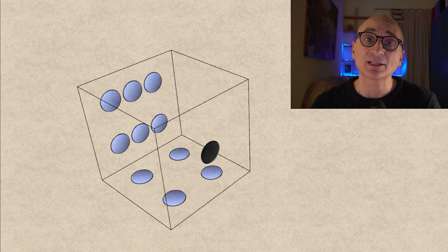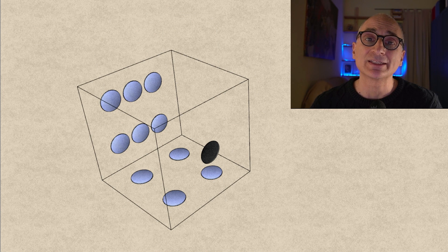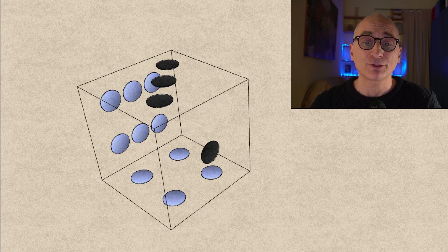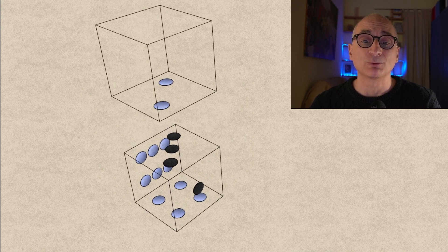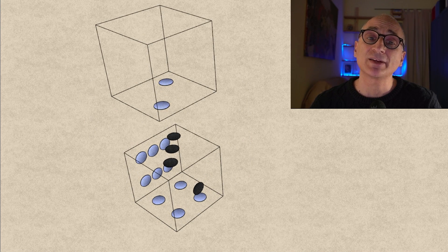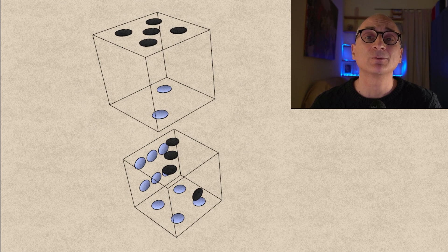So let's assume that on the bottom face there's a four. So on the opposite face there will be a three and on the next dice there will be a two and on the opposite face there will be a five and we're stuck again.